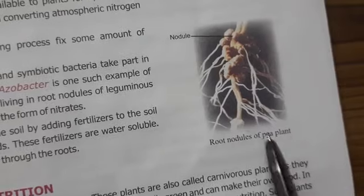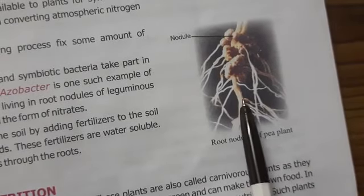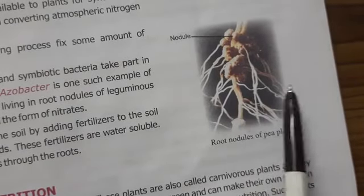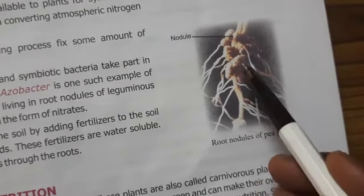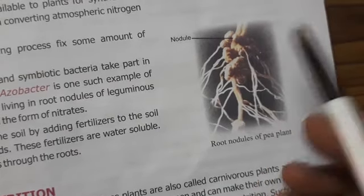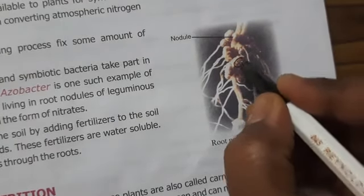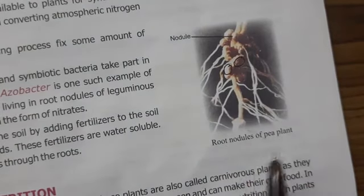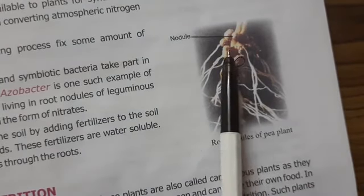This is a leguminous plant — for example, a pea plant. You can see the roots have round, swollen nodules. These are called root nodules.